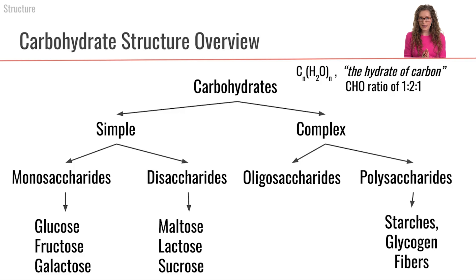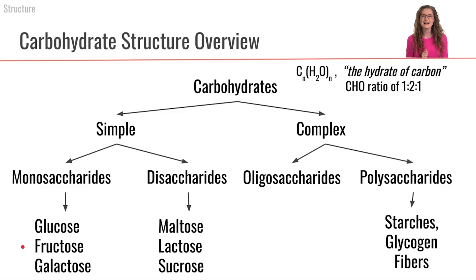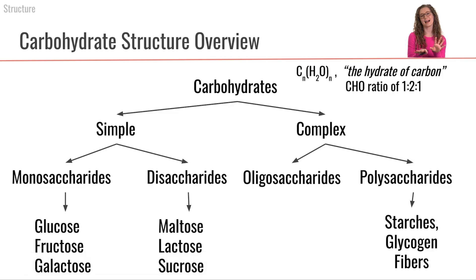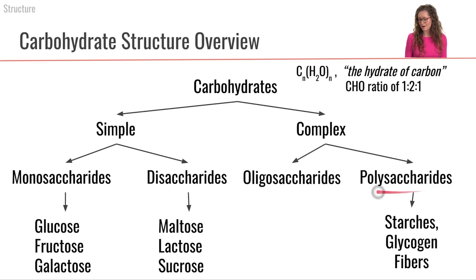To summarize carbohydrate structure: carbohydrates have a carbon-to-hydrogen-to-oxygen ratio of 1:2:1. Simple carbohydrates include monosaccharides (glucose, fructose, galactose) and disaccharides (maltose — two glucose; lactose — glucose plus galactose; sucrose — glucose plus fructose). Complex carbohydrates include oligosaccharides (3–10 monosaccharides) and polysaccharides (more than 10 monosaccharides), which come in the forms of digestible starches, glycogen (the animal storage form), and fibers, which humans cannot digest.